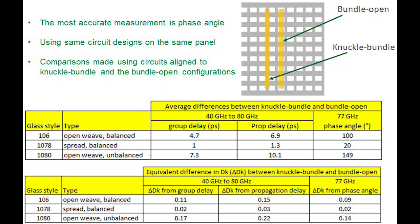For the 1078 spread glass — which has no openings — the glass weave effect is really minimized. The difference between the two conductor configurations is about 20 degrees phase angle at 77 GHz, which is pretty tolerable for radar sensors. For the 1080 glass, which is open weave and unbalanced, we saw a worst-case phase angle difference of 149 degrees at 77 GHz. For radars operating at 77 GHz, that's a very substantial number and should be avoided.